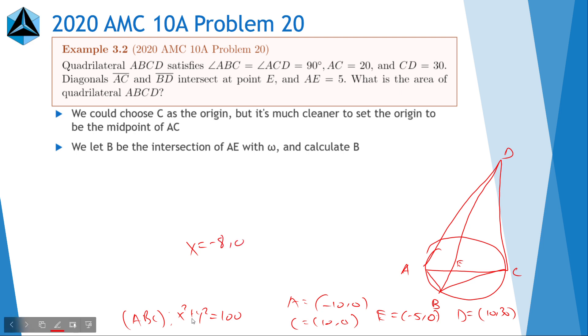And then from there, we get that X is equal to negative 8 or 0. So when X is equal to 0, it's this intersection. So we can toss that out. So what we want is X equals negative 8. And then that means that Y is equal to negative 6.